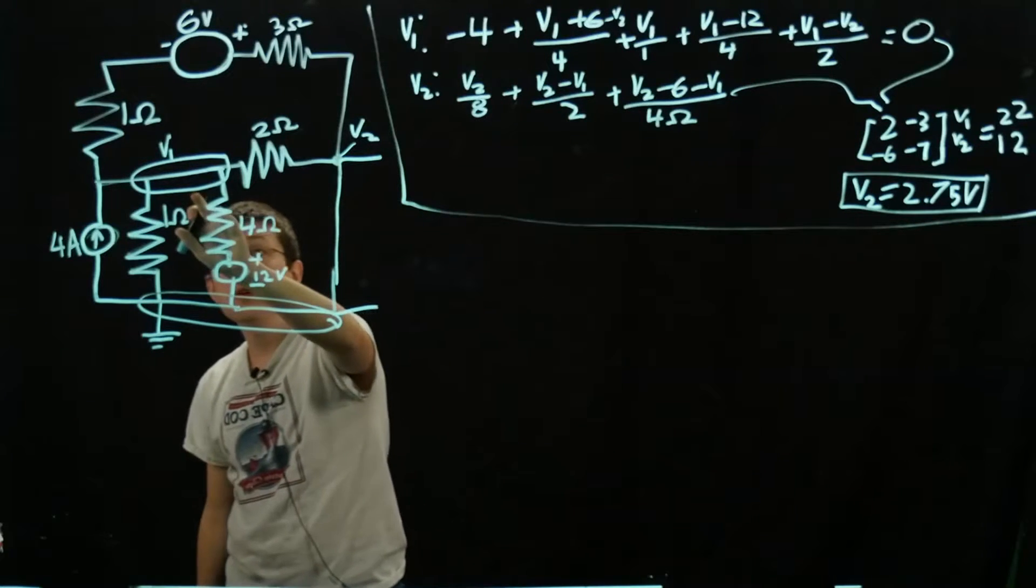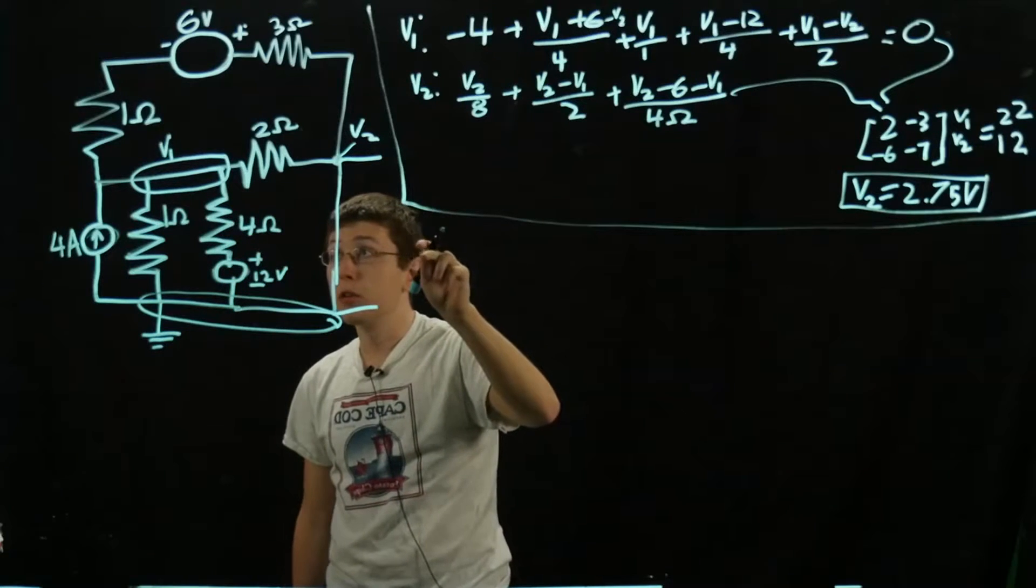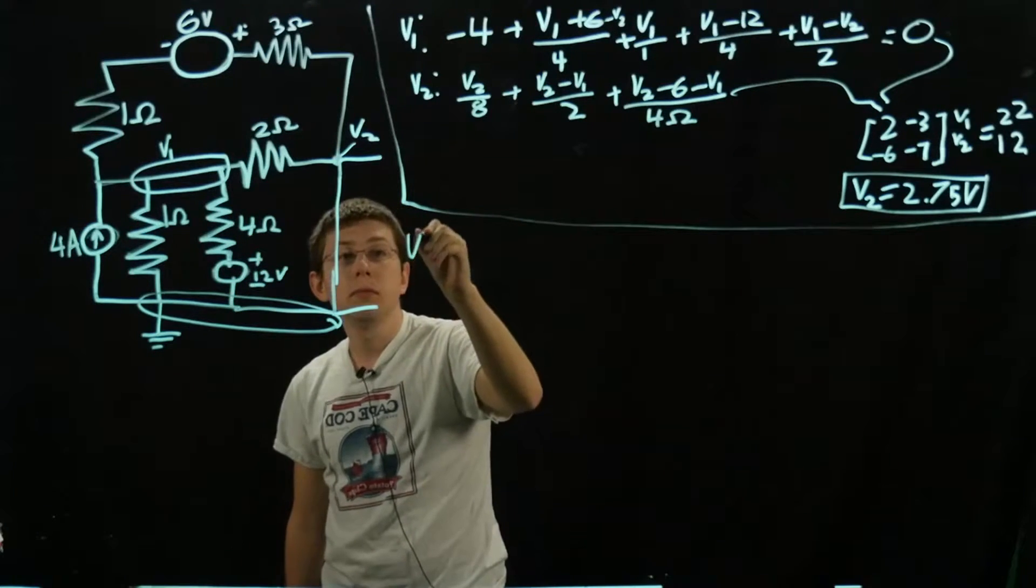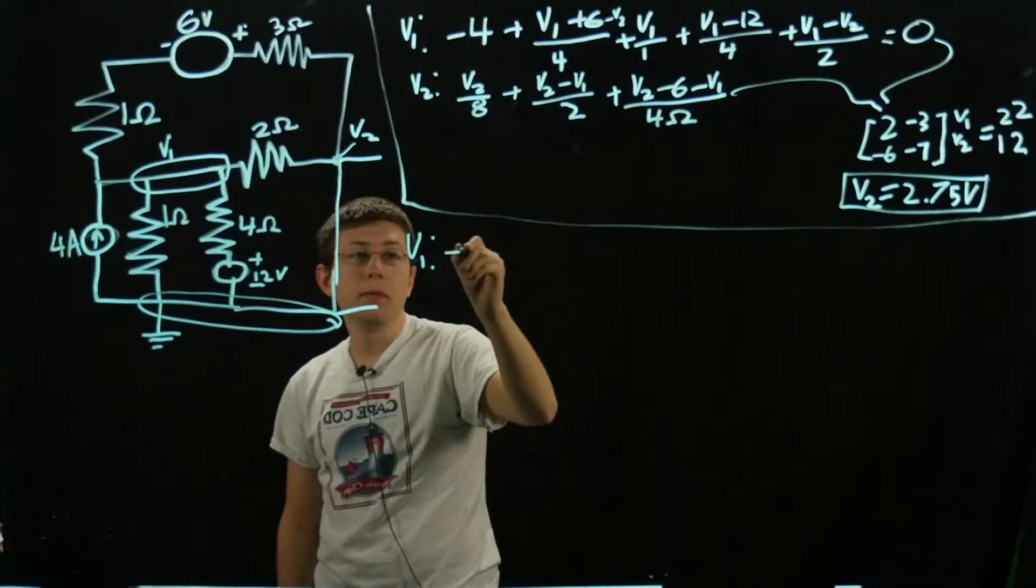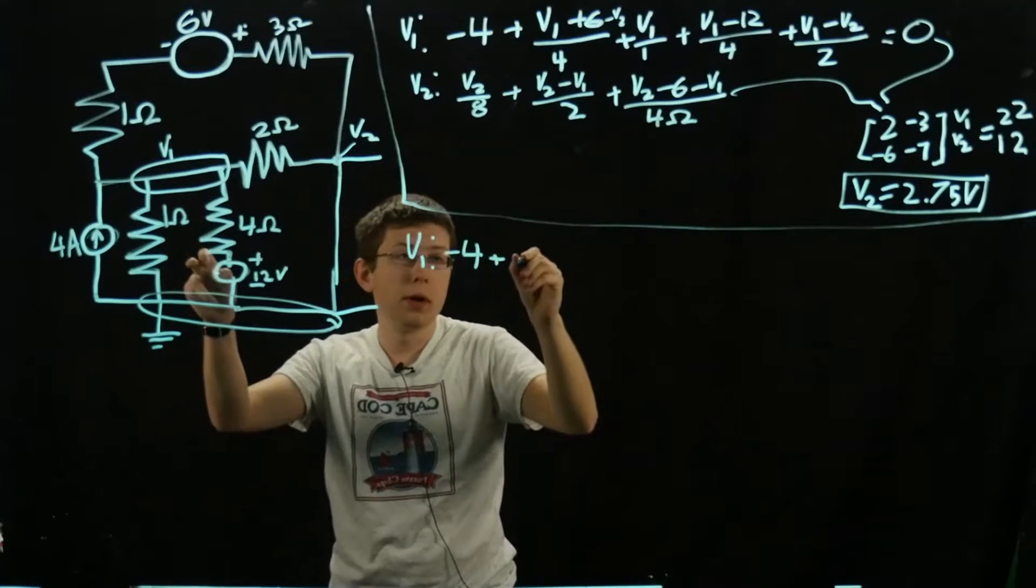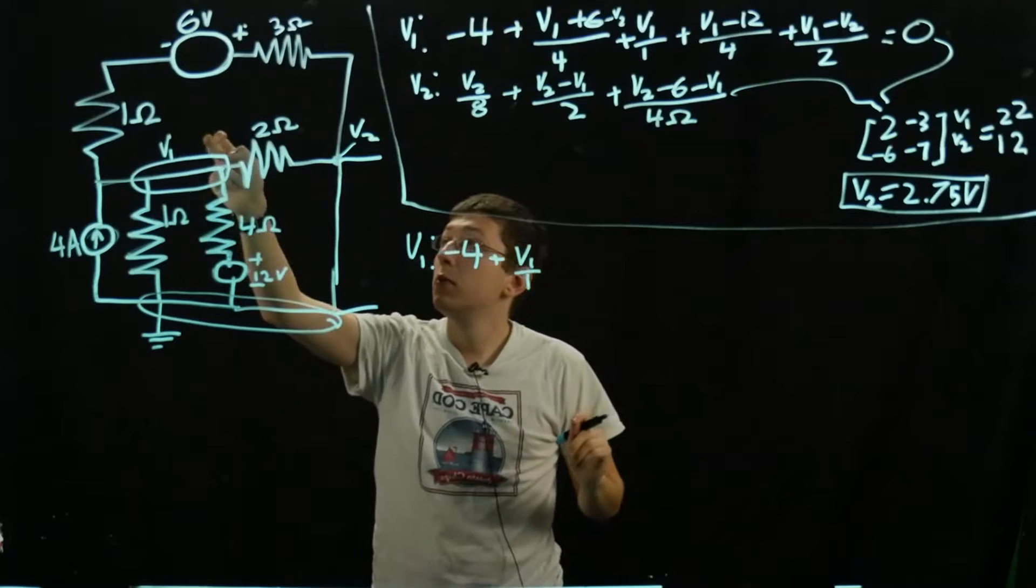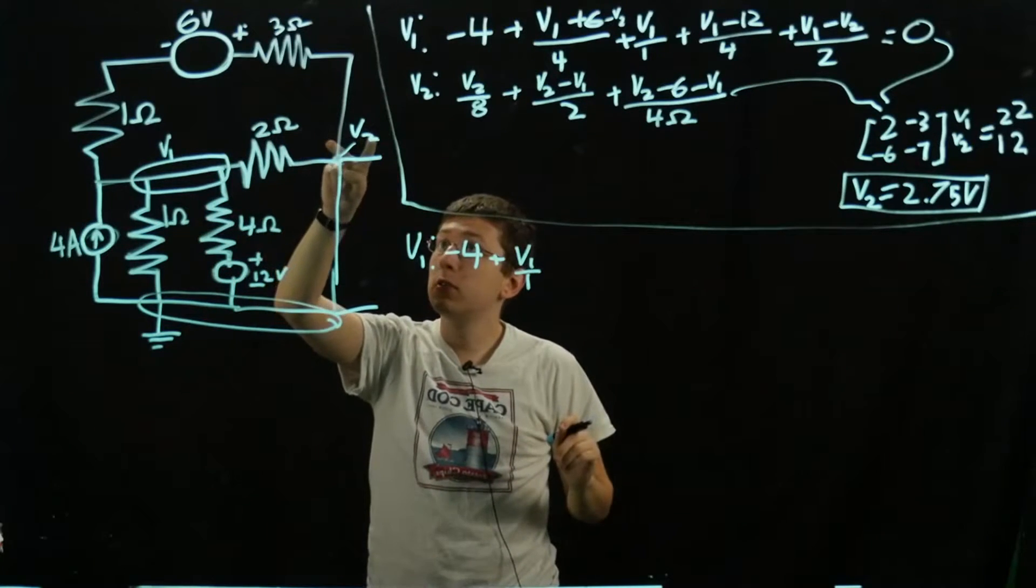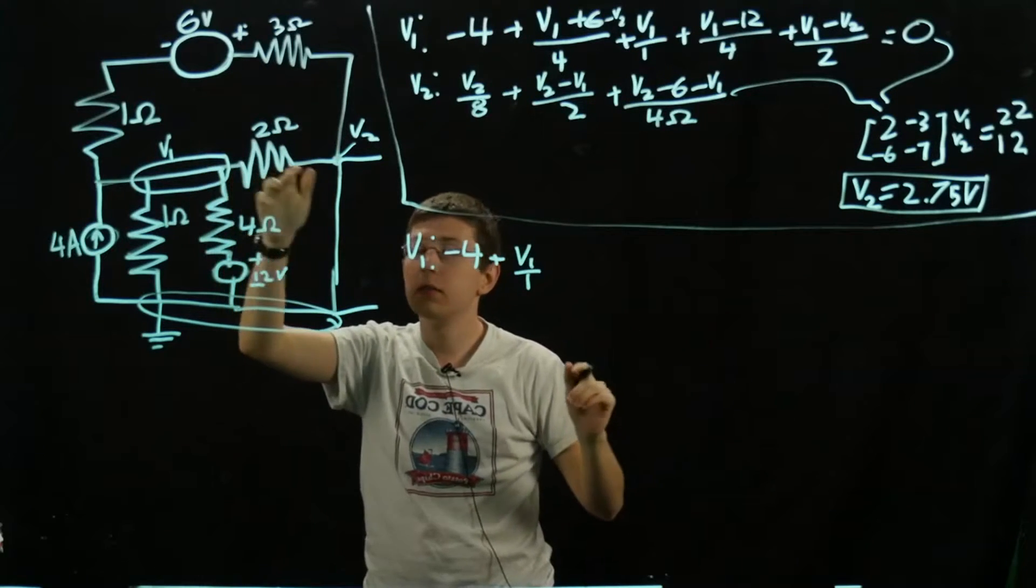The only thing we can find here is V1. Let's write some expressions for V1. We have negative 4, same as before, plus V1 over 1, V1 - V2, in which V2 is 0, so it'll just be V1 - 0, V1 over 2 ohms.